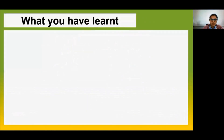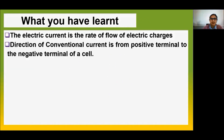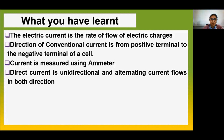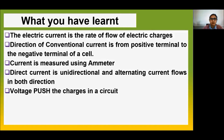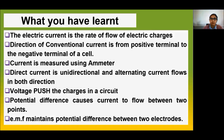In summary: electric current is the rate of flow of electric charges. The direction of conventional current is from the positive terminal to the negative terminal of a cell. Current is measured using an ammeter. Direct current is unidirectional, and alternating current flows in both directions. Voltage is the push given to charges in a circuit. Potential difference causes current to flow between two points, and EMF maintains the potential difference between two terminals.